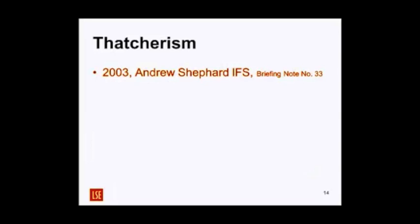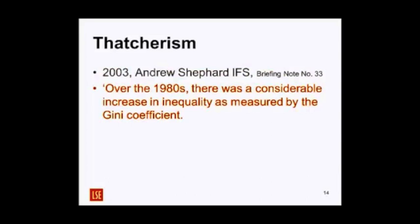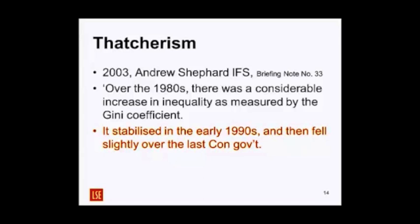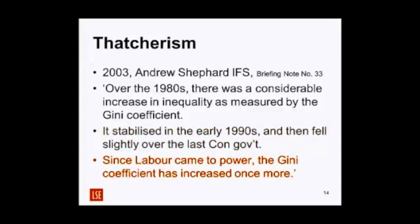In terms of income distribution, how did these changes in the 1980s affect Britain? According to the Institute for Fiscal Studies — a left-of-centre think tank — over the 1980s there was a considerable increase in inequality as measured by the Gini coefficient. It stabilised in the early 1990s and fell slightly, then since Blair came to power the Gini coefficient has increased once more, showing increasing inequality under Tony Blair.